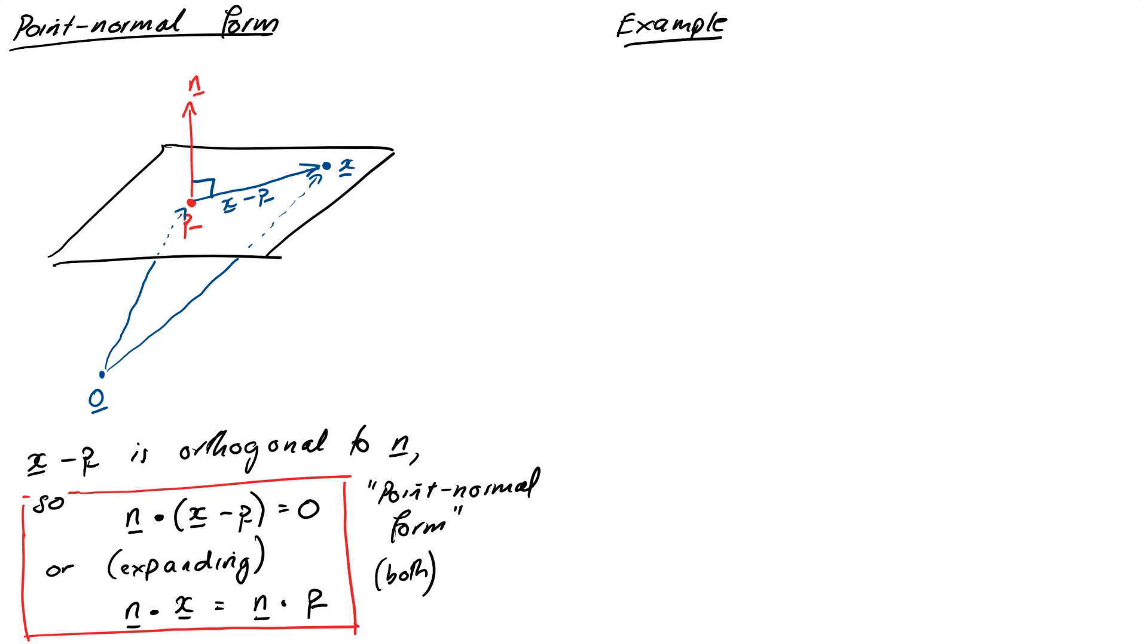So let's look at an example. Suppose we have a plane through the point (1, 2, -1) and that (2, 3, 7) is a normal vector. Then we can form the point normal form as N dot X equals N dot P. Now let's just put in (2, 3, 7) for N, (X, Y, Z) that's just our general point for our vector X, and (1, 2, -1) for our point P.